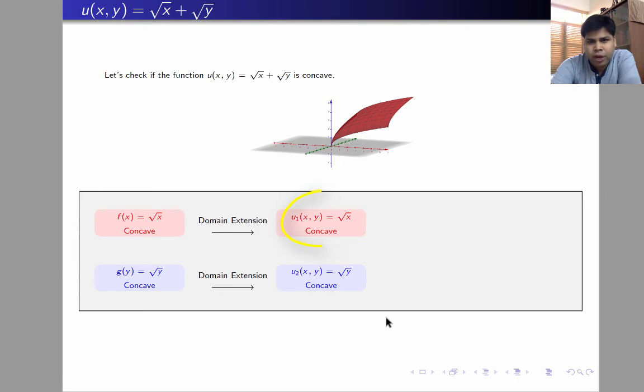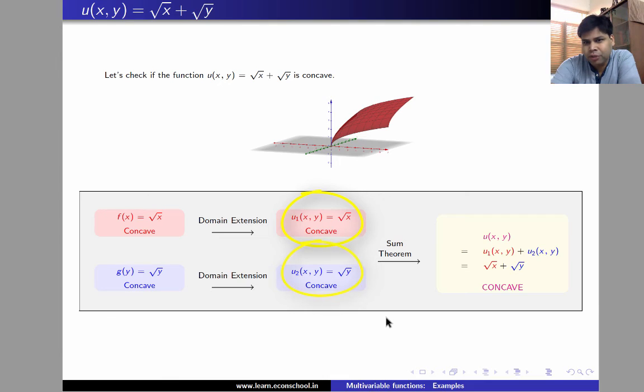So we know that u₁(x,y) equal to root x is a concave function, u₂(x,y) equal to root y is a concave function. If you're going to add these two functions, then by some theorem we know that u(x,y) which is equal to u₁(x,y) plus u₂(x,y) which is root x plus root y will be a concave function.